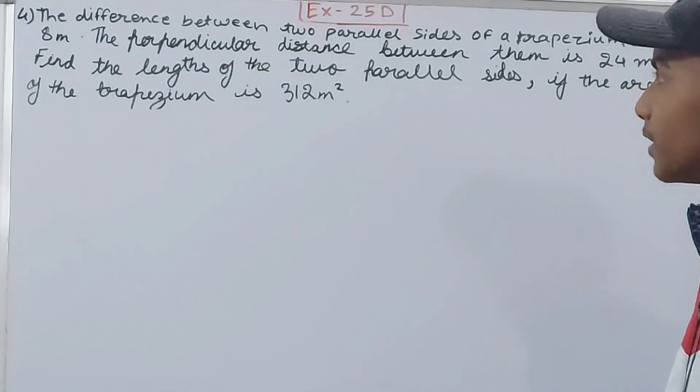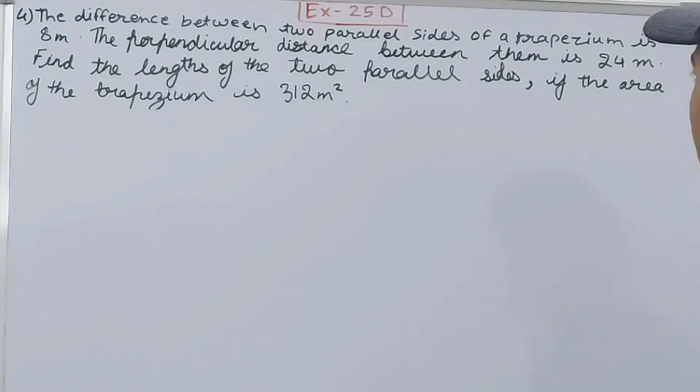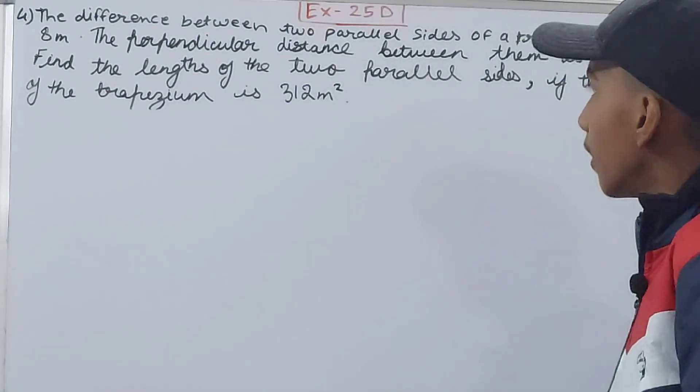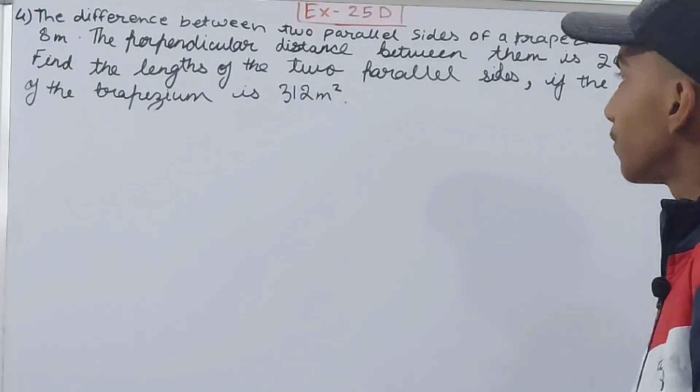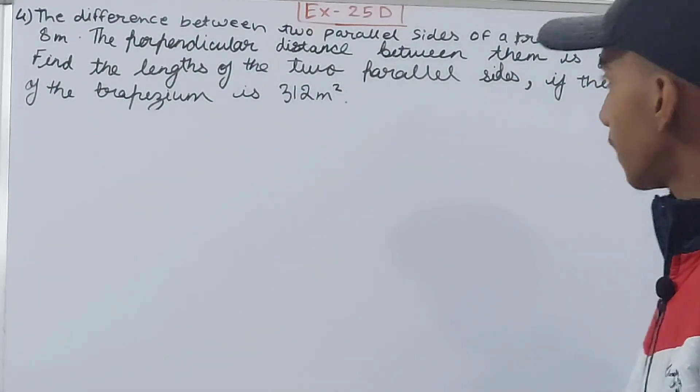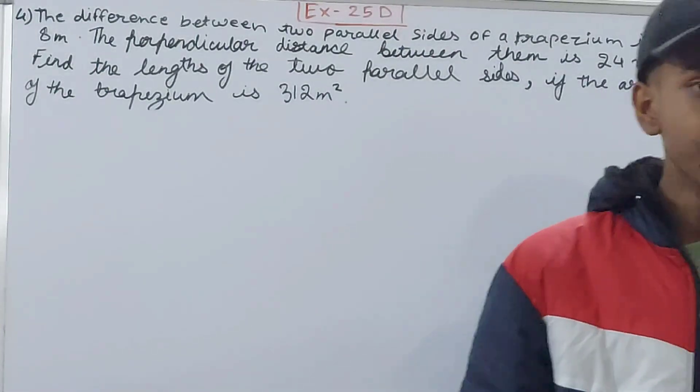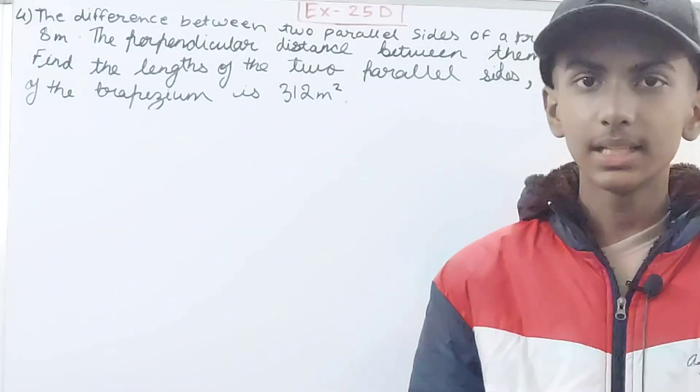The difference between two parallel sides of a trapezium is 8 meters. The perpendicular distance between them is 24 meters. Find the lengths of the two parallel sides if the area of the trapezium is 312 square meters.